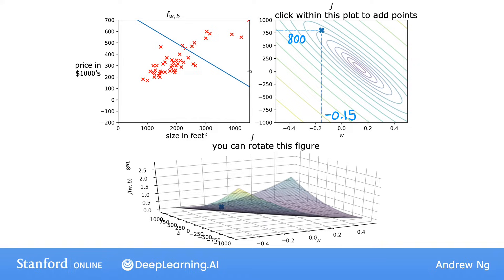And in fact, this particular pair of values for W and B corresponds to this function, f of x, which is this line that you can see on the left. This line intersects the vertical axis at 800, because B equals 800, and the slope of the line is negative 0.15, because W equals negative 0.15.